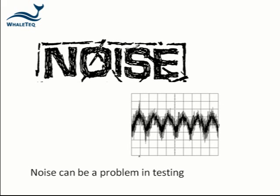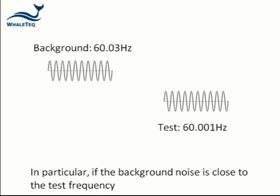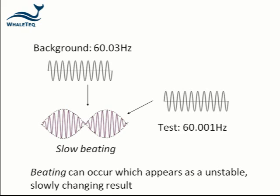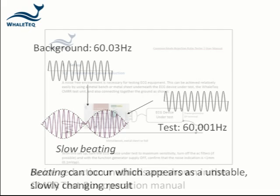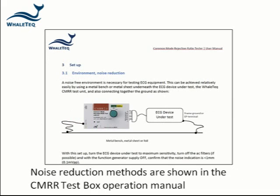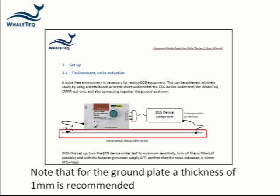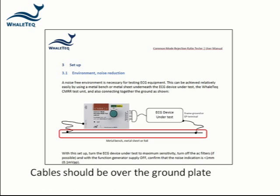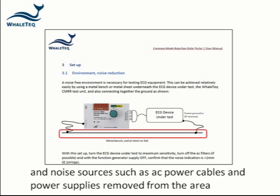Noise can be a problem in testing. In particular, if the noise is significant and the test frequency is similar to the environment, beating can occur, which appears as an unstable test result slowly changing with time. Noise reducing methods are shown in the operation manual. Note that for the ground shield to be effective, a minimum thickness of 1 mm is recommended. Cables should be kept over the ground plate, and noise sources such as AC cables and power supplies should be removed from the test area.